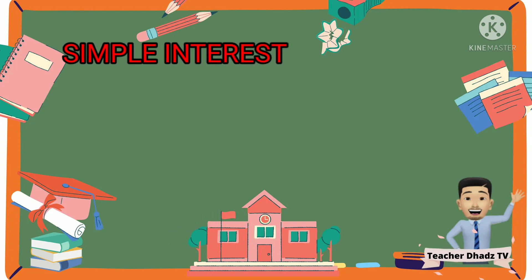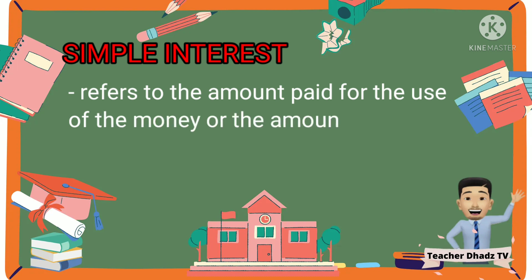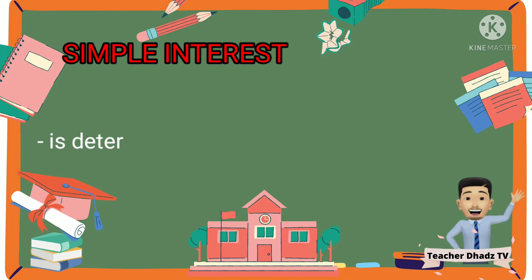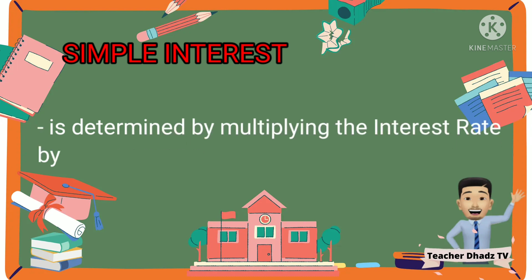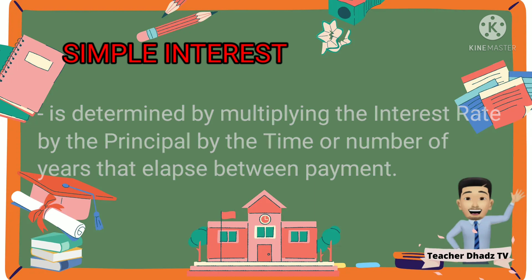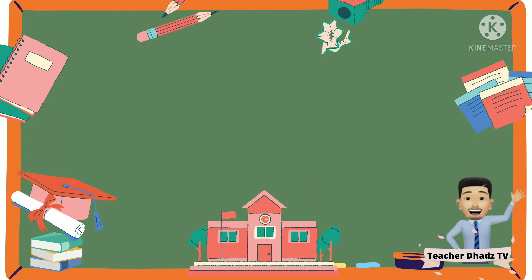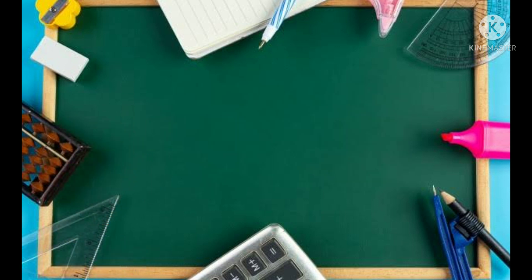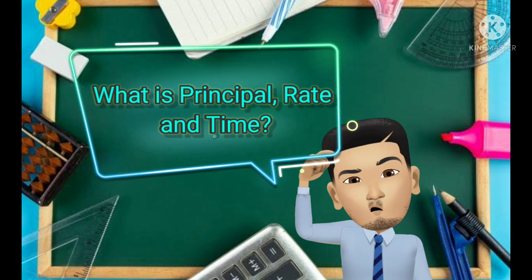Simple interest refers to the amount paid for the use of money, or the amount earned for the use of credit. Simple interest is determined by multiplying the interest rate by the principal and by the time, or the number of years that elapsed between payments. Have you noticed the terms principal, rate, and time in the definition?